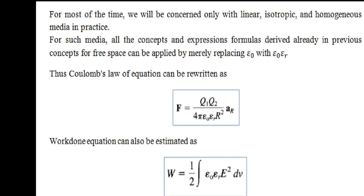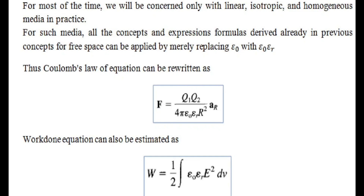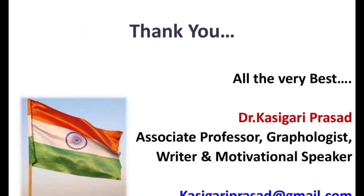With this replacement, Coulomb's law becomes F = q₁q₂ / (4πε₀εᵣr²) â_r, and the energy stored is rewritten as W = (1/2) ∫ ε₀εᵣ E² dv. Simply, an εᵣ term is added to the existing equations.